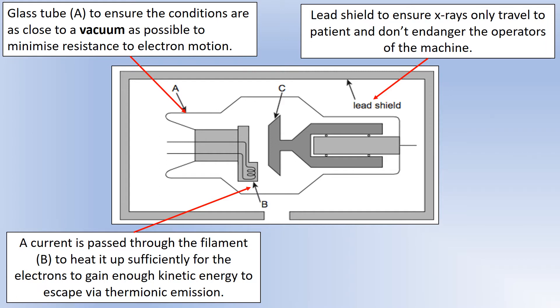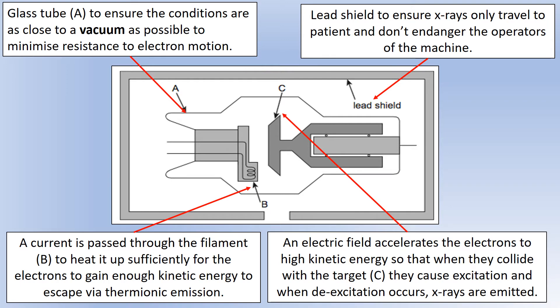To actually produce electrons, the tube uses a process called thermionic emission. A current is passed through the filament, which heats up and gives electrons enough kinetic energy to escape. They are then accelerated towards the anode and target labeled C, where they collide with orbital electrons. These electrons become excited and upon de-excitation produce x-rays — approximately one percent of the de-excitations produce the x-rays we're looking for.